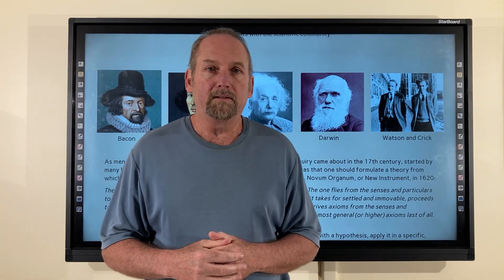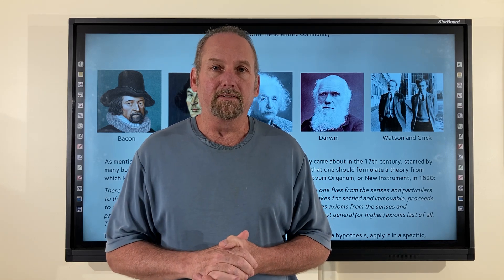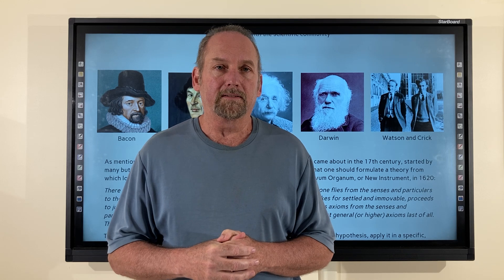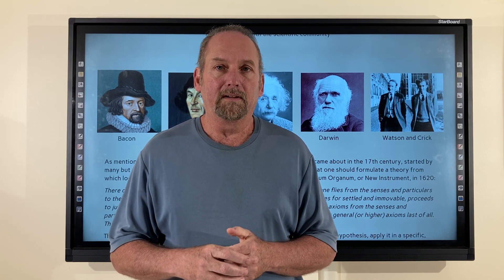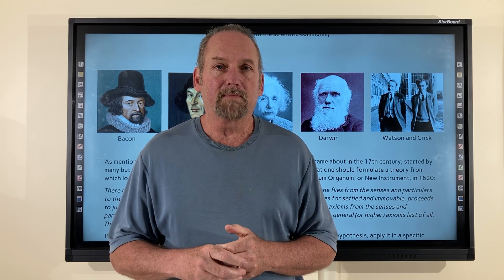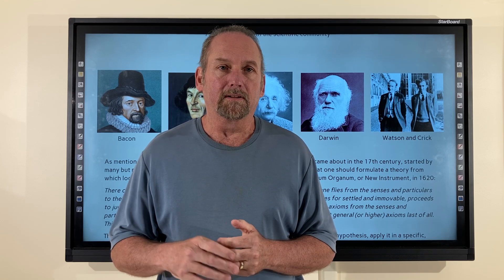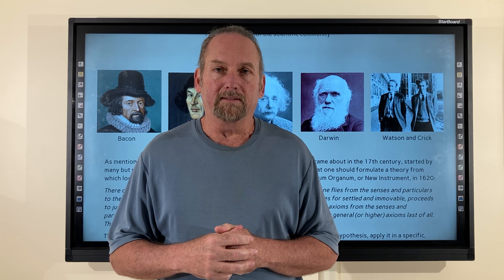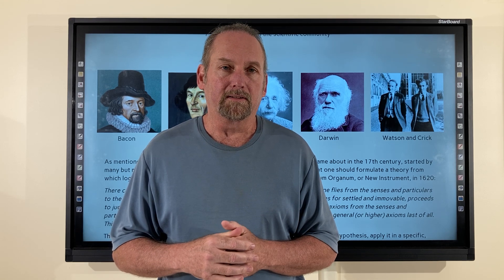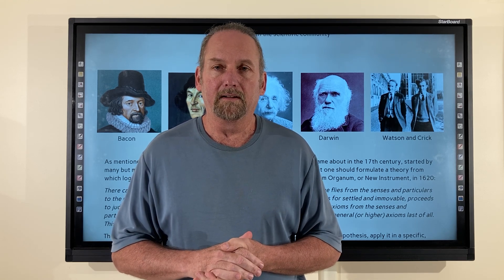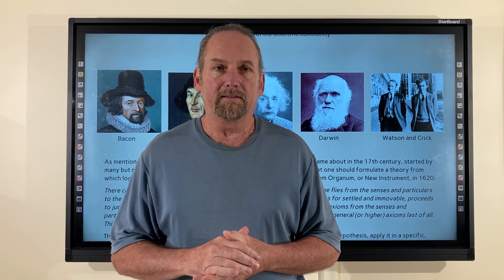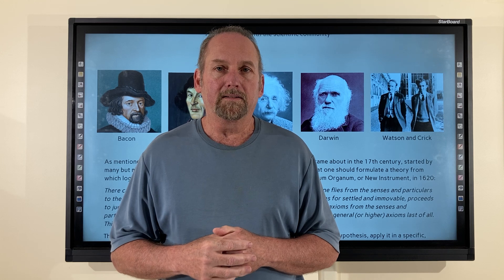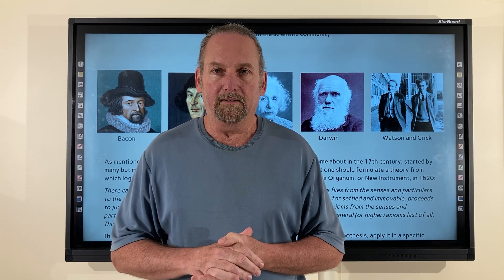There can only be two ways of searching into and discovering truth. One flies from the senses and particulars to the most general axioms, and from these axioms proceeds to judgment and to discovery of the lower axioms. The other derives axioms from the senses and particulars rising by a gradual and unbroken ascent so that it arrives at the most general or higher axioms last of all. This is the true way, but it is as yet untried.